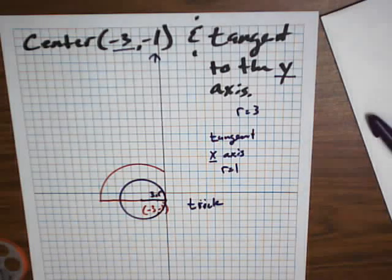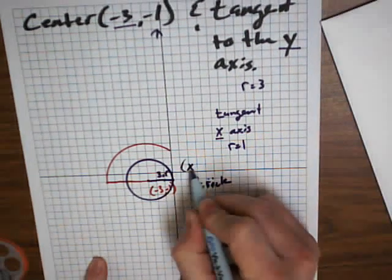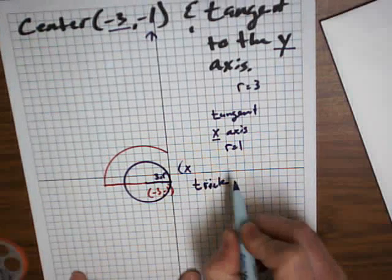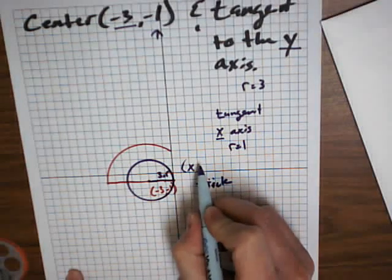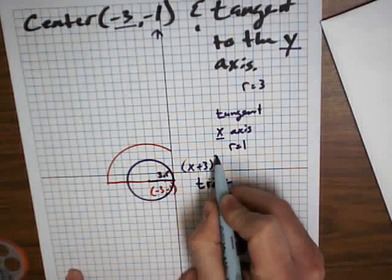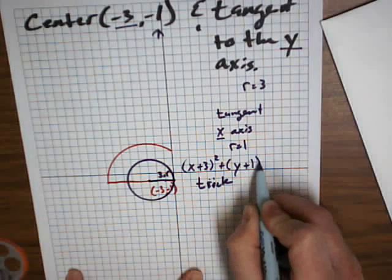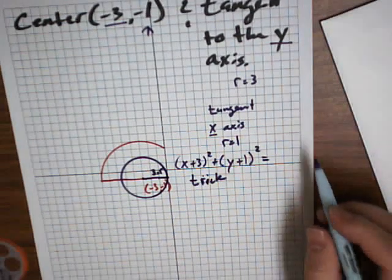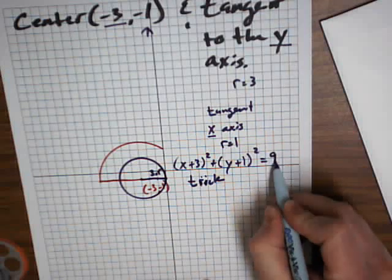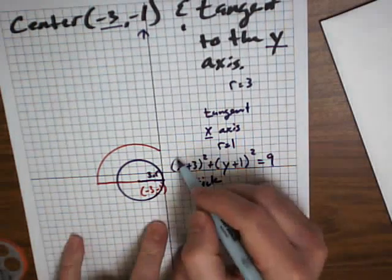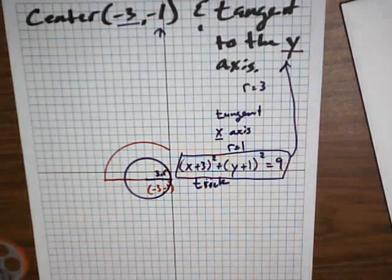So you've got to square that when you put it into your formula, right? So it's x... what would it be? I'm going to write out the formula. (x plus 3) squared plus (y plus 1) squared equals, y-axis here, 3 squared. I'm going to go ahead and put it in 9. And that would be my answer to the original question of tangent to the y-axis.